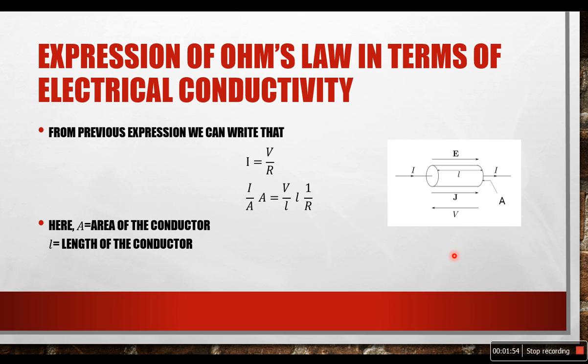Today we will focus on the expression of Ohm's law in terms of electrical conductivity. From previous expression we can write that I equals V by R. In the left side if we divide and multiply I with A and at the right side if we divide and multiply V with L then we get this equation. Here A is the area of conductor and L is the length of the conductor. As we can see if we divide the current flowing through the conductor with its cross sectional area A we will get the current density J, and if we divide the voltage of the conductor with the length of the conductor we will get the electric field epsilon.